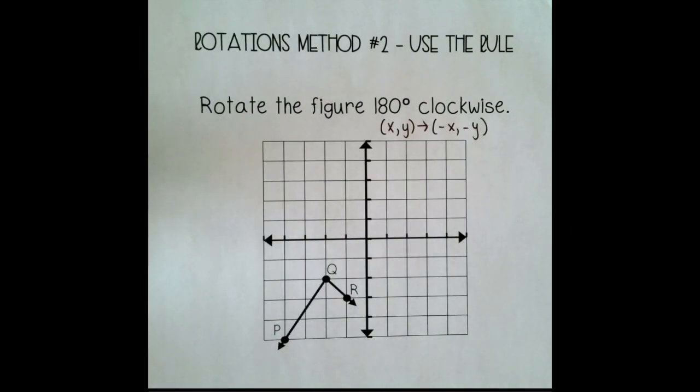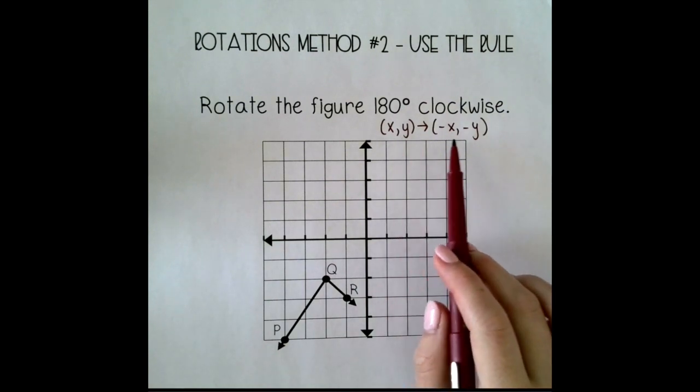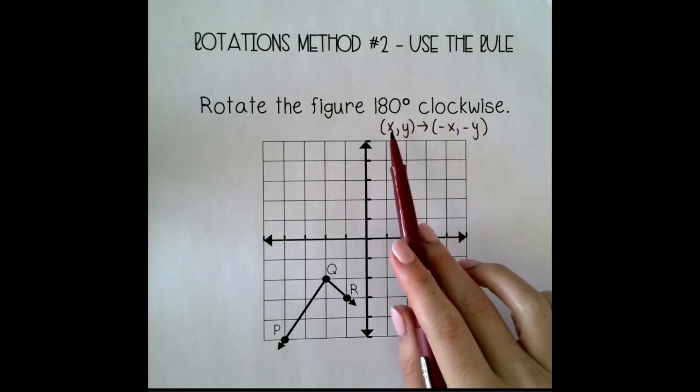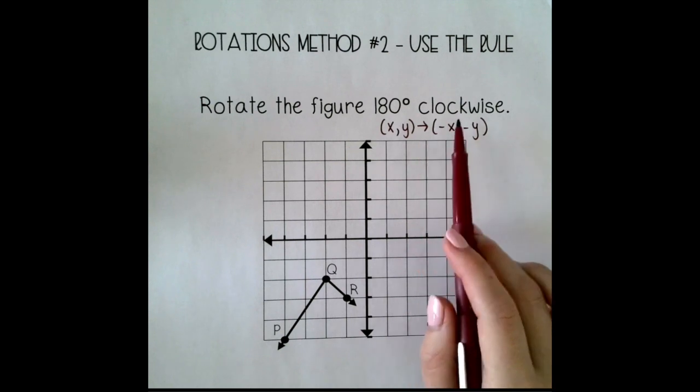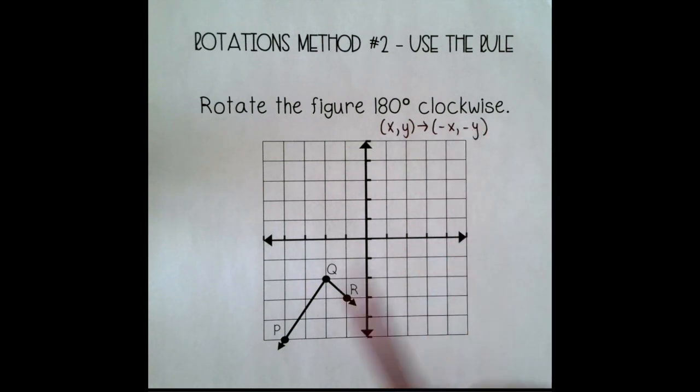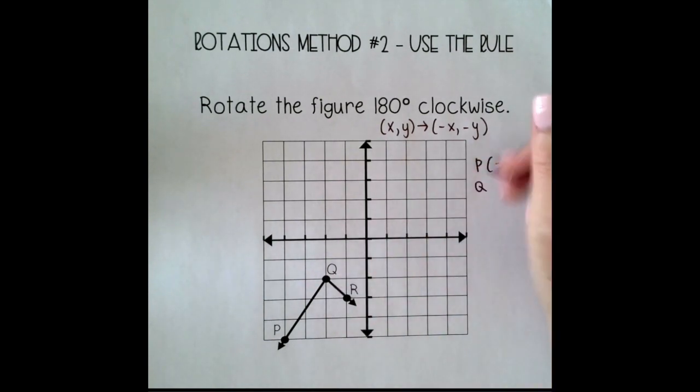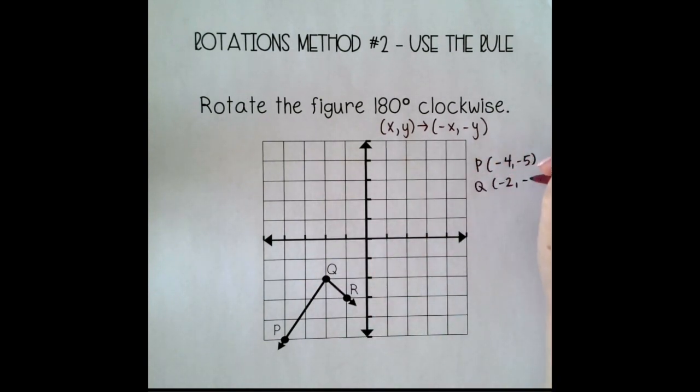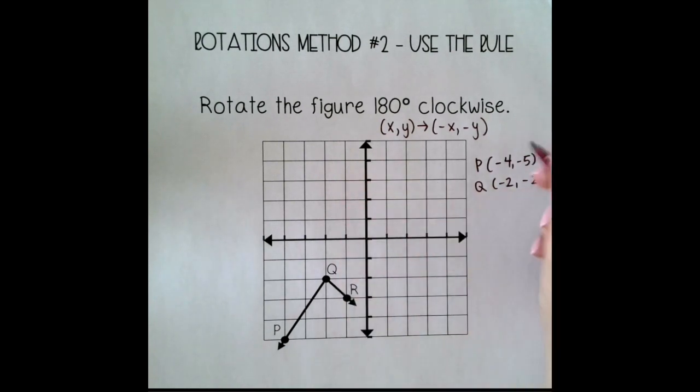The second method I want to show you is using the coordinate rule. I have the coordinate rule for 180 degrees written out right here. And for 180, it doesn't matter if you're going clockwise or counterclockwise, it's still the same coordinate rule. So I'm going to start by listing the points of my pre-image. So I've got P, Q, and R.